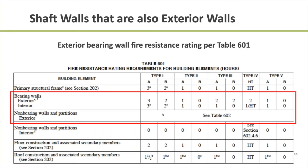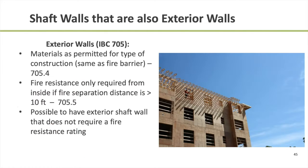For determining fire resistance ratings for exterior walls that are also shaft walls, it's now a function of Table 601 and potentially Table 602 in IBC, rather than a function of how many stories the shaft enclosure is connecting. For example, in a Type 3A building, a bearing exterior wall would be rated for two hours. For a non-bearing exterior wall, you'll be referenced to Table 602, which provides fire resistance ratings as a function of fire separation distance — how close the exterior wall is to an adjacent building, property line, or public street.